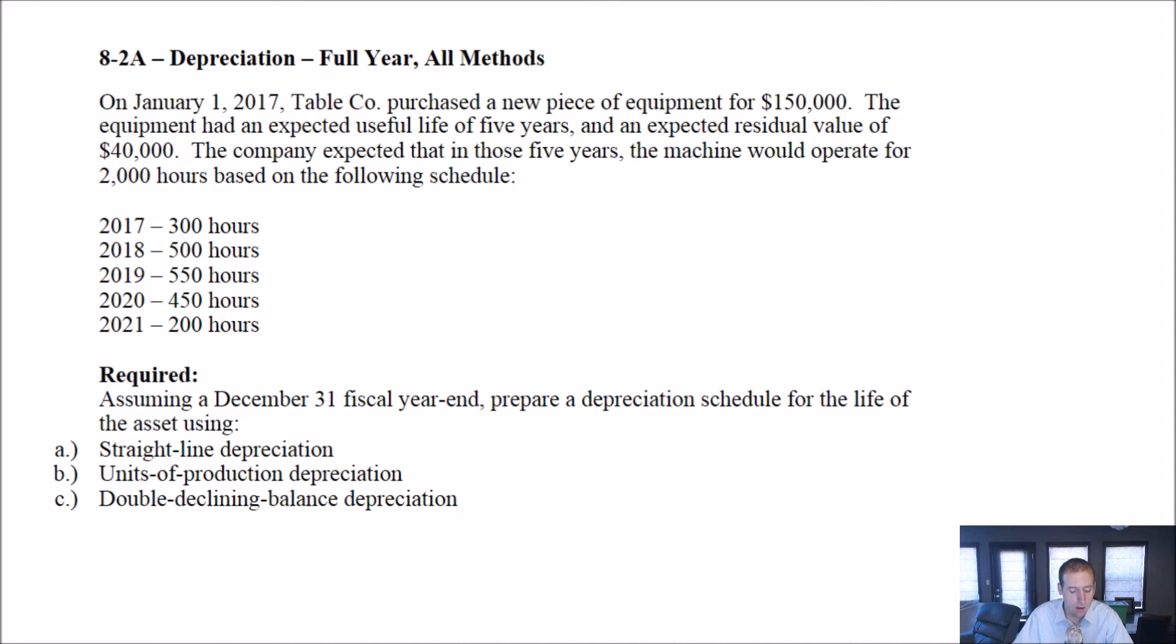So to do the straight line method, as the name suggests, it's the most straightforward. Maybe I should read the problem first off. So on January 1st, 2017, Table Company purchased a new piece of equipment for $150,000.